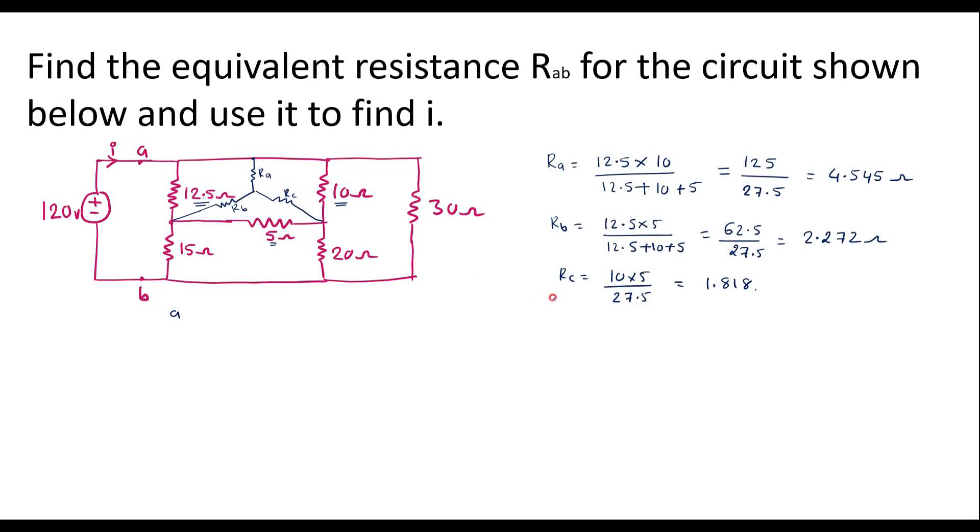Now I will redraw the circuit considering RA, RB, and RC. For the time being, I will ignore this 120 volt source. First, I will find the equivalent resistance between terminal A and B. So here we have RA, then here we have RB, here we have RC.